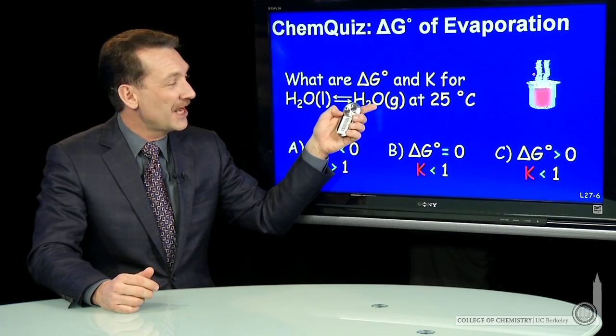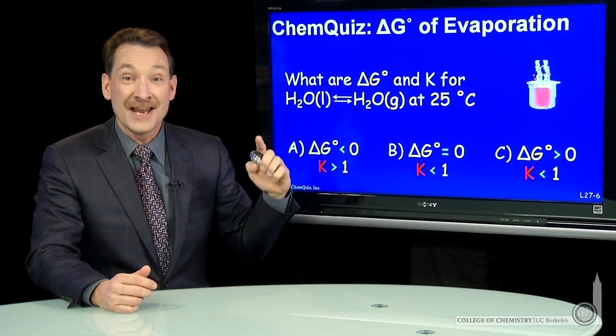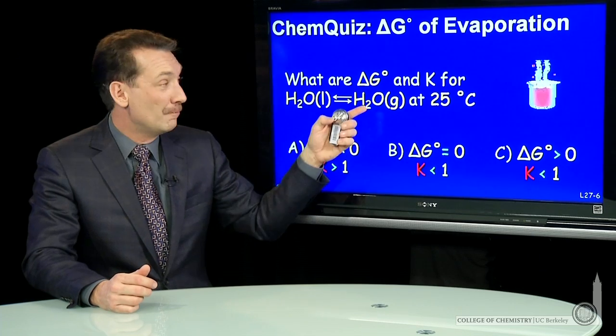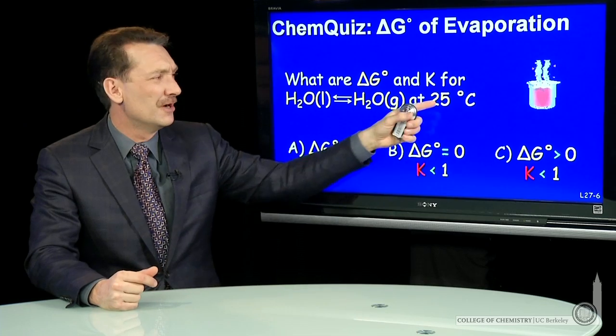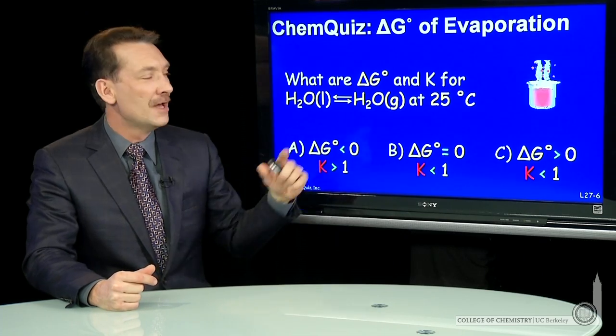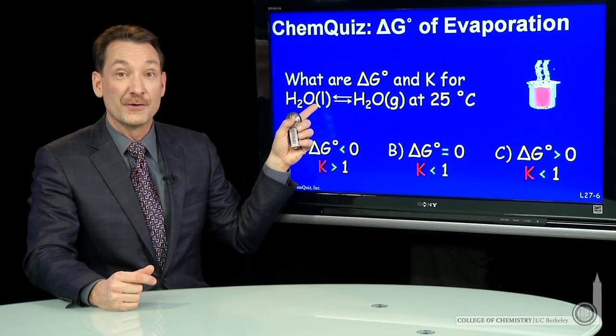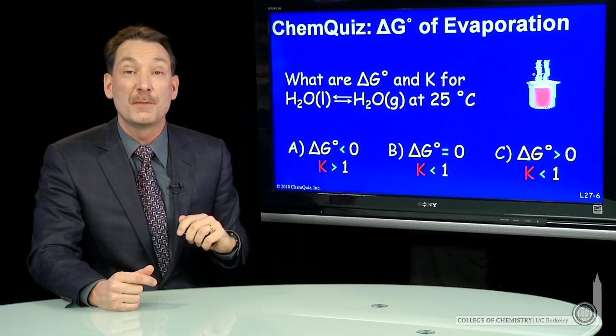So you would guess that this reaction in the standard state must favor the reactants. The pressure is too high. One atmosphere is too high a pressure for 25 degrees C. So we're going to favor the reactant. That means ΔG will be positive.